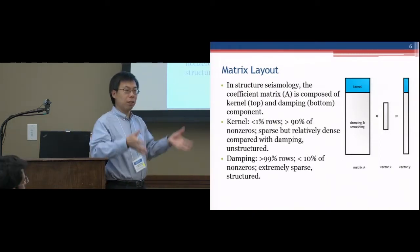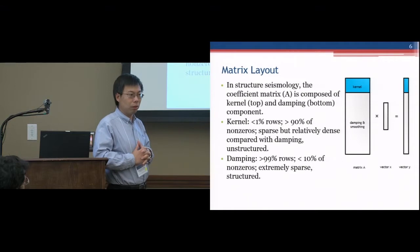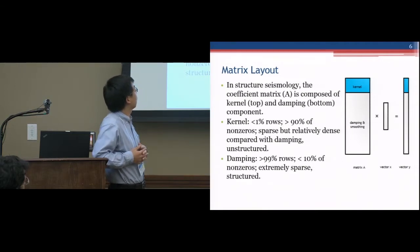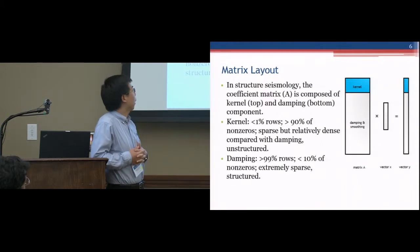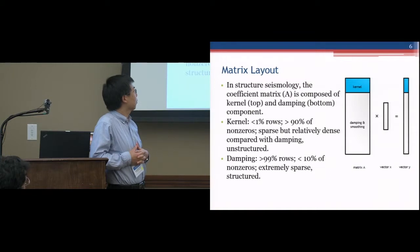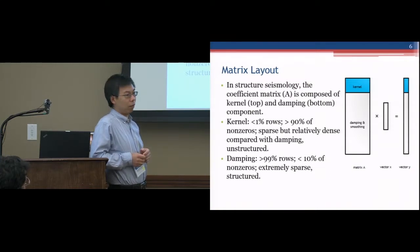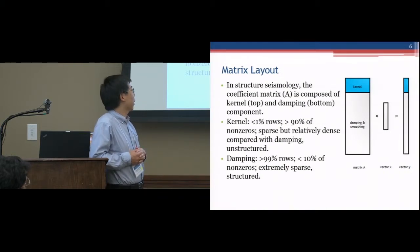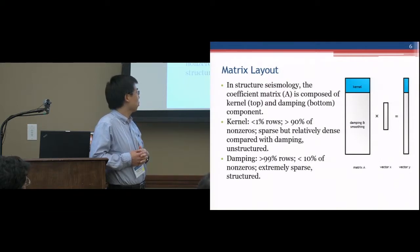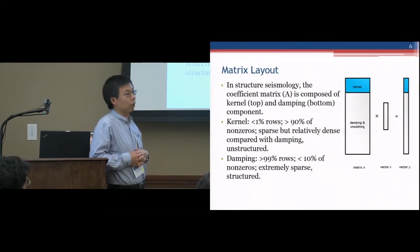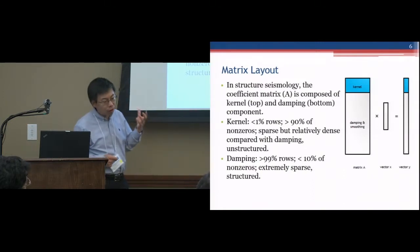In seismic processing, the sparse matrix is ready to contain two parts. On the top it's called the kernel, and the second part is called the damping and smoothing. For the kernel part, in the total matrix, the kernel part contains less than 1% of rows, and more than 90% of the nonzero elements. Even the kernel part is sparse, but it's relatively dense compared to the damping. In the second part, for the damping and smoothing, it's very, very sparse — it contains more than 99% of rows, and at least 10% of the nonzero elements.